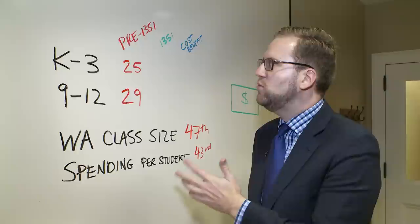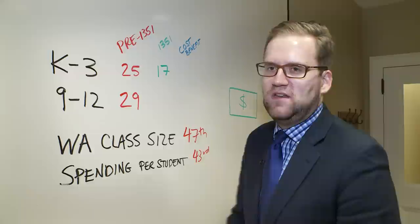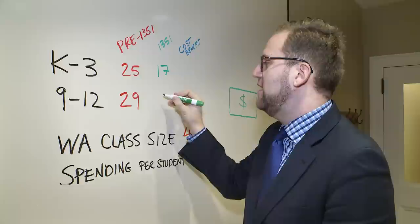So this is what will happen when Initiative 1351, which was just passed last fall, is fully implemented. In our K-3 classrooms, we're going to go from class sizes of 25 kids today to 17 once the Initiative is fully implemented, in four years according to the Initiative itself. At the higher levels, higher grades, we'll go from 29 students per class down to 25.